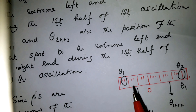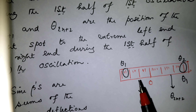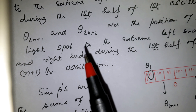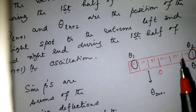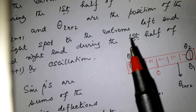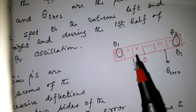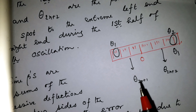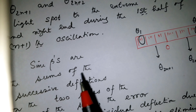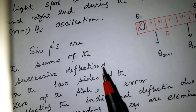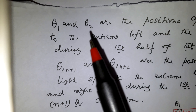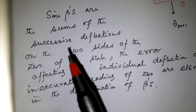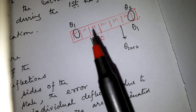Theta_(2n+1) and theta_(2n+2) are the positions of the light spot at extreme left and right. After n+1 oscillations, the amplitude will be decreased due to damping. Beta_1 equals theta_1 plus theta_2, and beta_(2n+1) equals theta_(2n+1) plus theta_(2n+2), which are sums of successive deflections on the two sides of the zero of the scale.